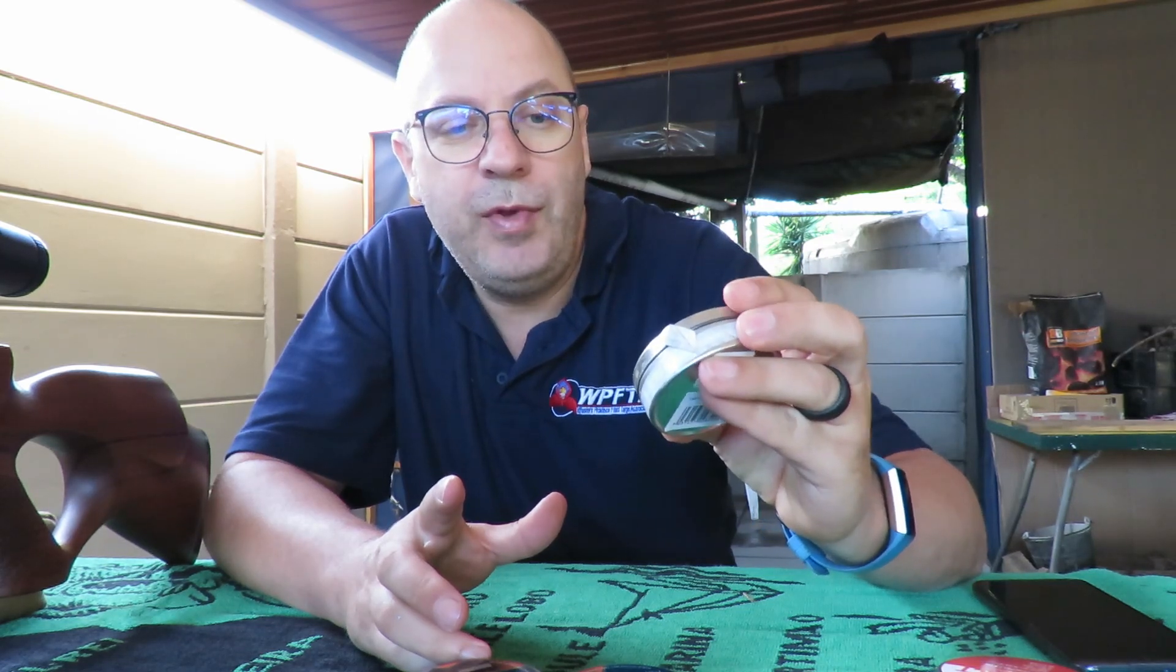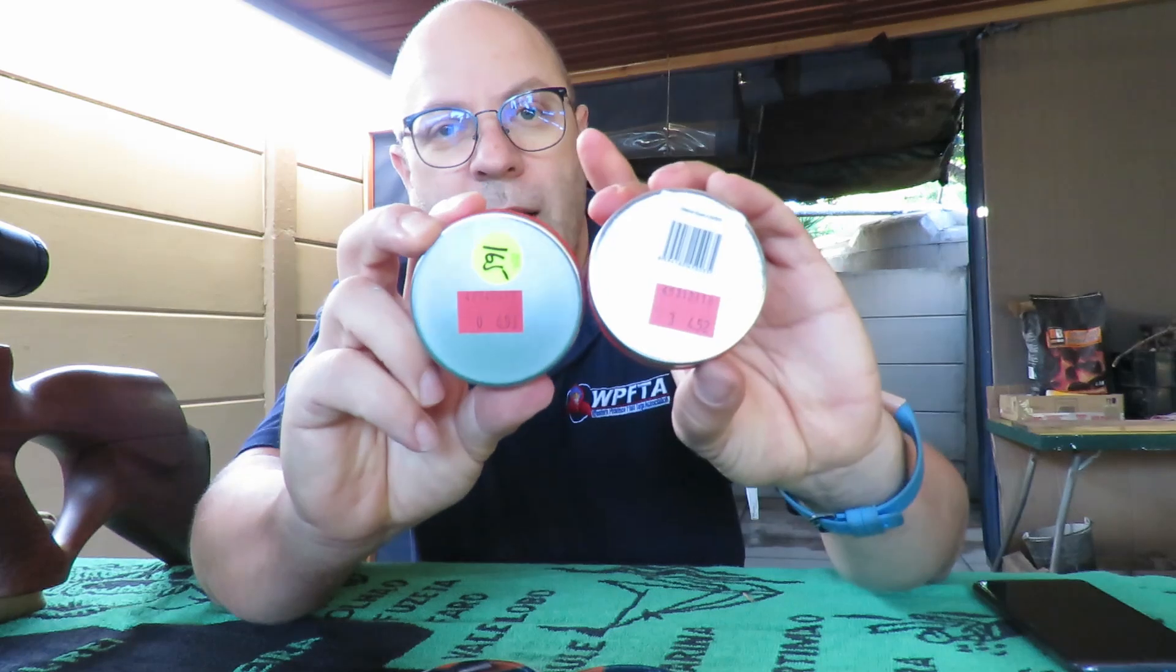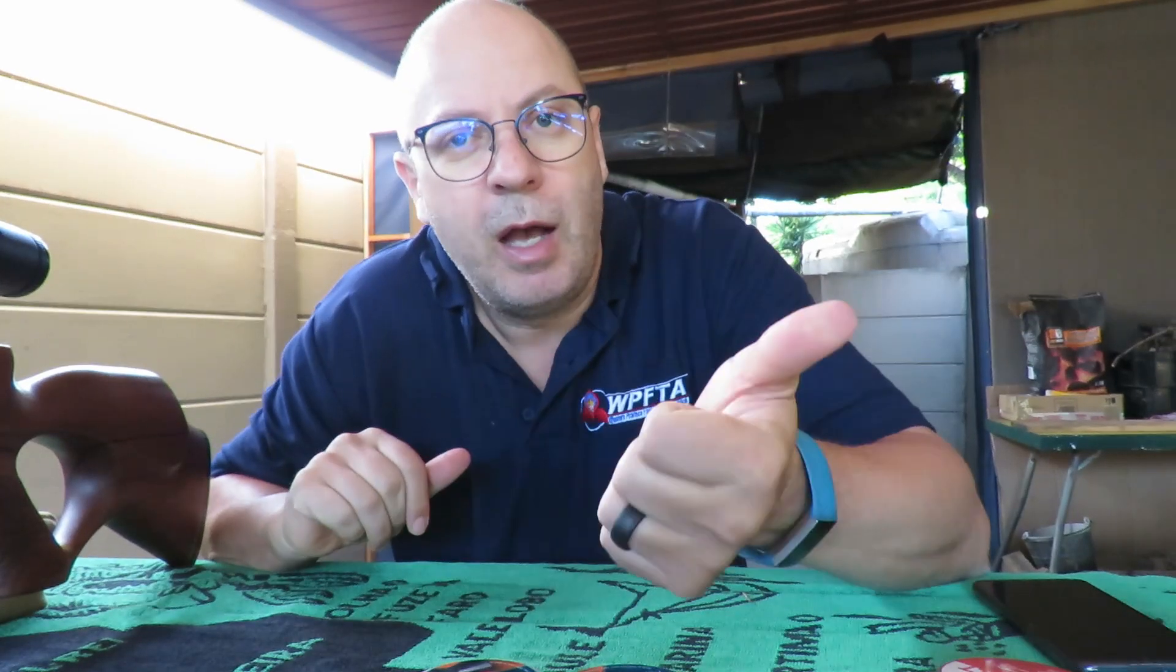If I've got time, I'm gonna shoot a second video comparing the Air Arms Diablos, these are the 10.3 grainers. I'm gonna compare them with the JSB Exact, also in 10.34, and then the 8.44 JSB's in head sizes 4.53 and 4.52 on the back of the tin. I hope you guys enjoy it. I'm curious to see if there's a massive difference between head sizes and the different guns that I'm shooting with.